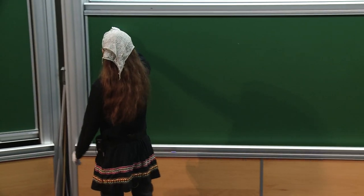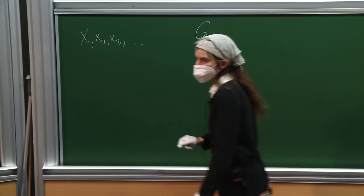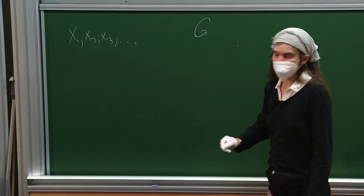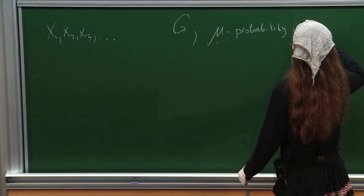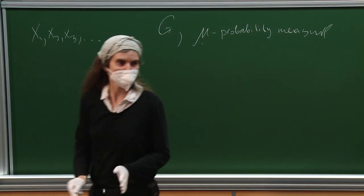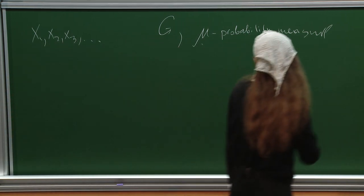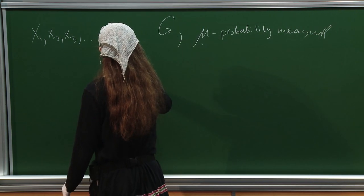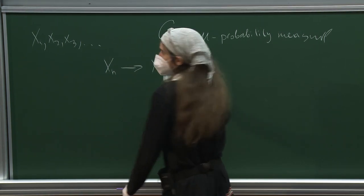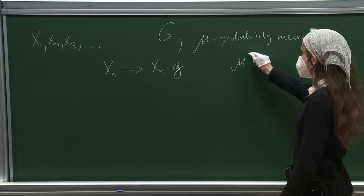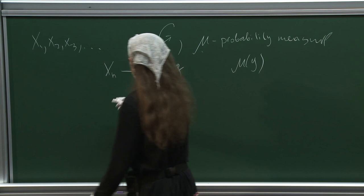I will speak about Poisson boundaries. There are several ways to define the boundary. We can consider a group and a random walk on a group given a probability measure mu. Don't hesitate to ask if you have any questions and interrupt me at any moment if something is not clear. We consider a random walk.